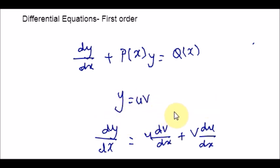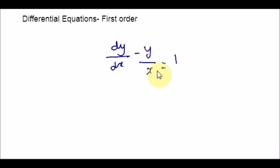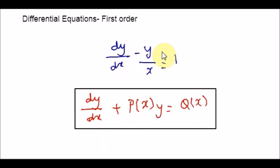When you just hear the steps it can seem dry, but applying them to an example makes the concept clear. Here is an example. Whenever you get a question like this, first check whether it is linear. Comparing the given example with the standard form, you can see that in the place of p(x) you have negative 1 over x.